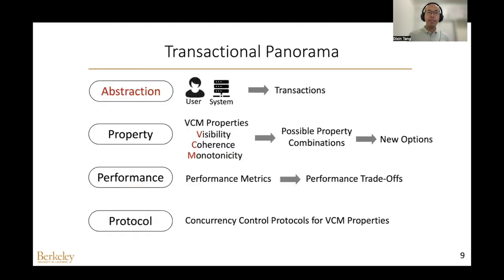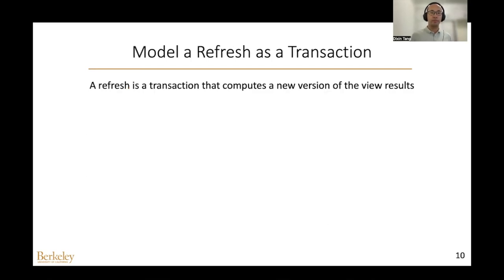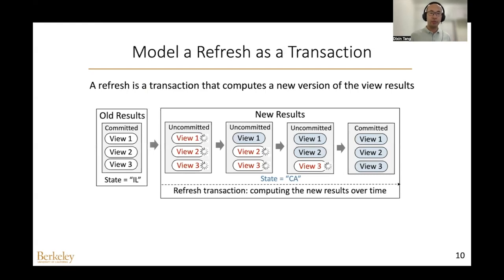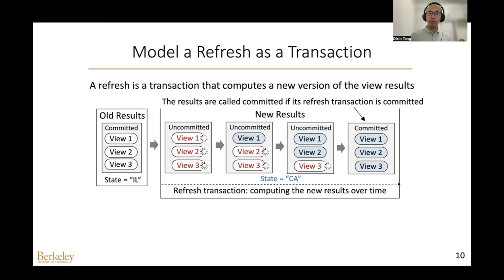Overall, Transactional Panorama includes four layers; in this talk I will focus on the first three. Starting with the abstraction layer: a refresh is modeled as a transaction that computes a new version of the view results. For example, a refresh transaction includes updating the filter to California and computing the view results for views one through three. A version of results is called committed if its refresh transaction is committed. If a view result is not computed yet, it is marked as an under-computation state, shown as a loading icon.